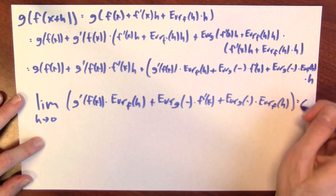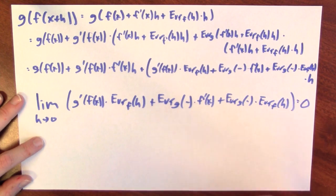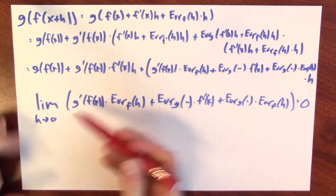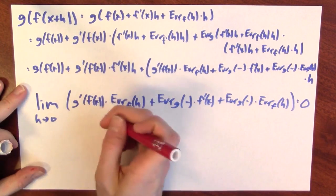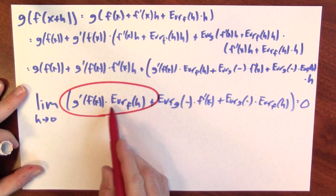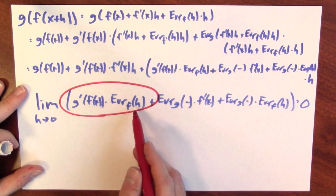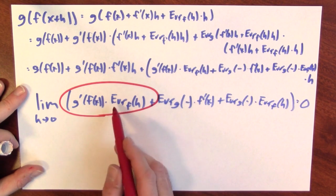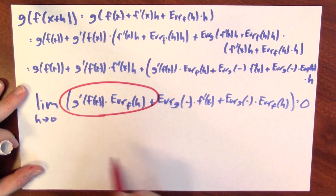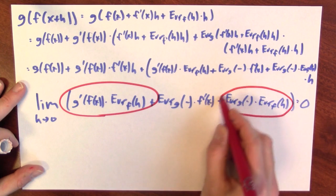Now, why do I know that that limit is equal to 0? Well, I can do it in pieces, right? It's a limit of a sum, so it's the sum of the limits. And I know that this first term is 0 because it's got an error f of h term in it. And because f is differentiable, the error term goes to 0. I likewise know the same for this, right? This has also got an error f of h term in it.